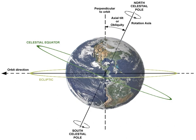It differs from orbital inclination. At an obliquity of zero degrees, the two axes point in the same direction, i.e., the rotational axis is perpendicular to the orbital plane.